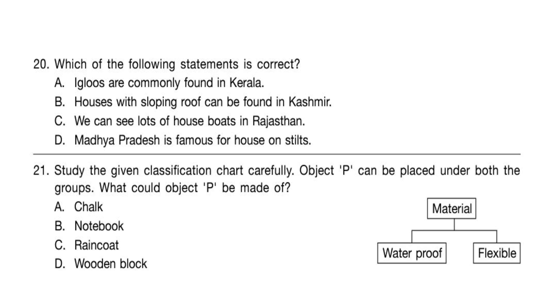The correct answer is Option B: Houses with sloping roof can be found in Kashmir.